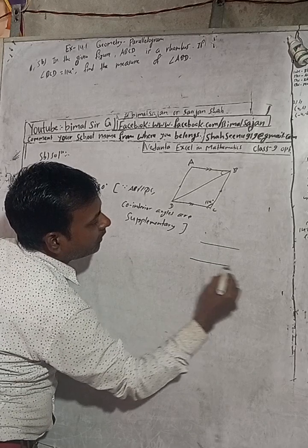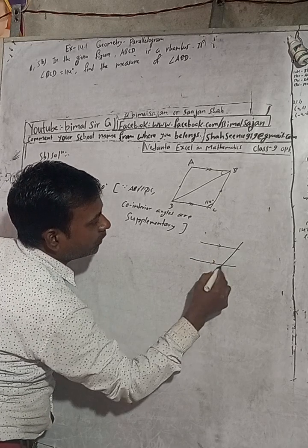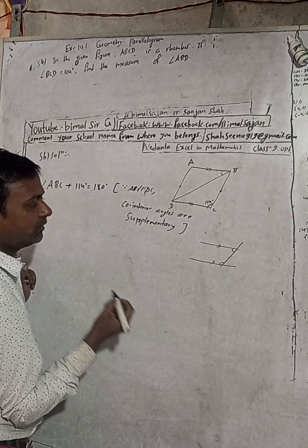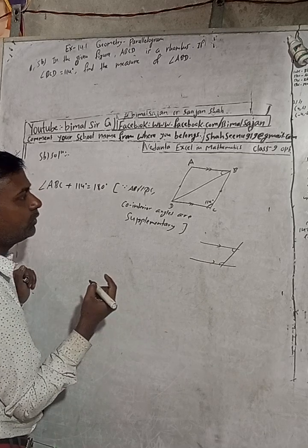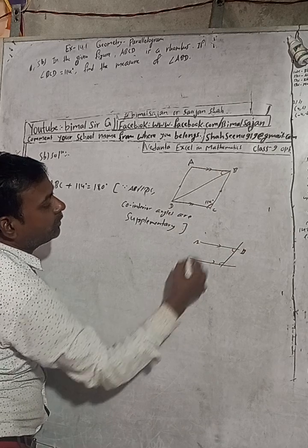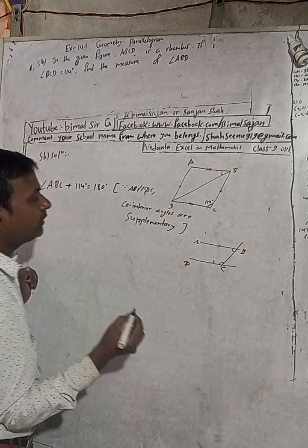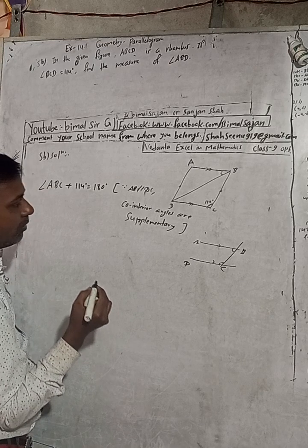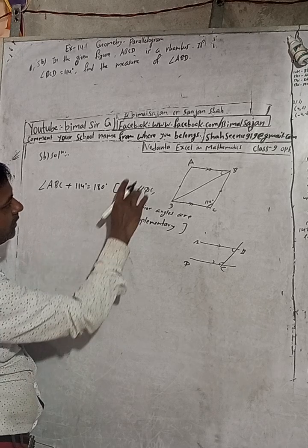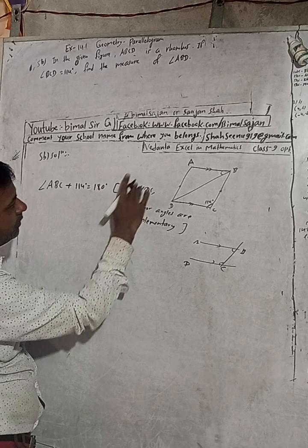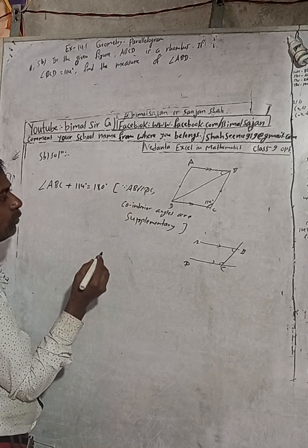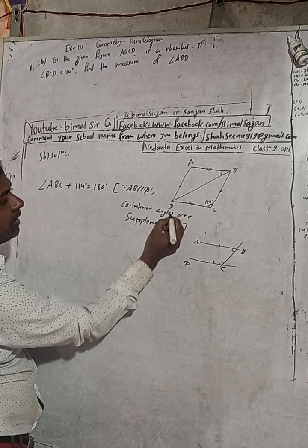If this is a parallel line — AB is parallel to DC — then this angle and this angle are called co-interior angles. So angle ABC and angle BCD are supplementary, meaning their sum is 180 degrees, because AB is parallel to DC.